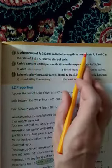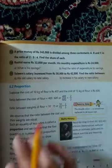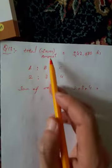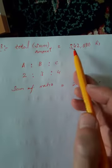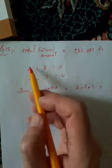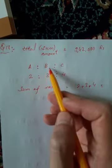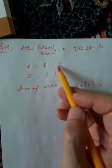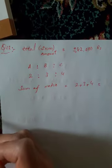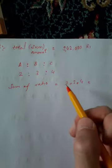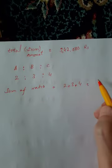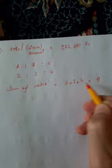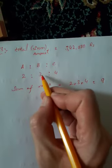The total sum is 342,000. The ratio is 2:3:4, so the sum of ratios equals 2 plus 3 plus 4.